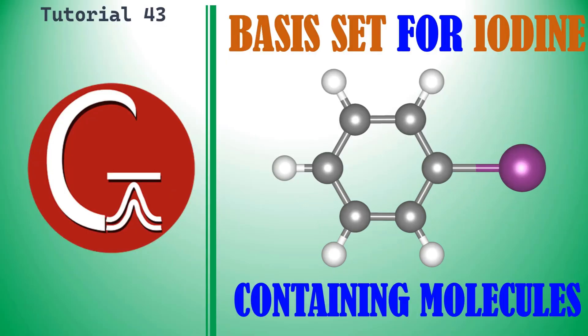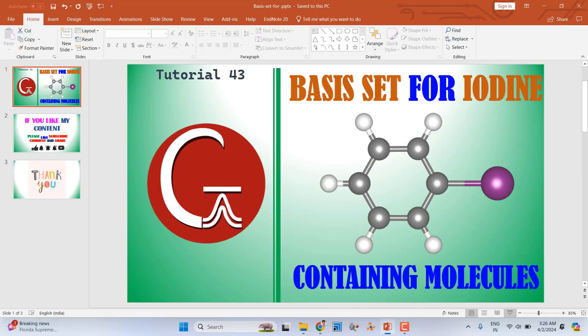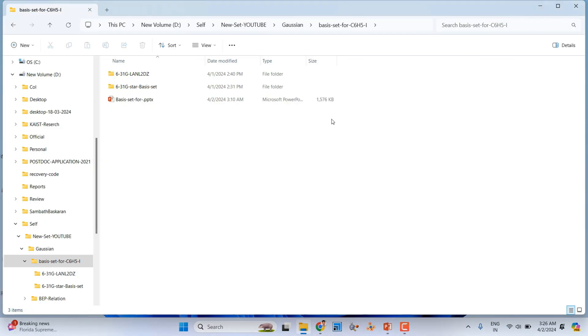Hello friends, this is tutorial 43 in Gaussian. In this tutorial I'm going to teach you the basis set for iodine and bromine containing molecules. The model system I have chosen is iodobenzene.